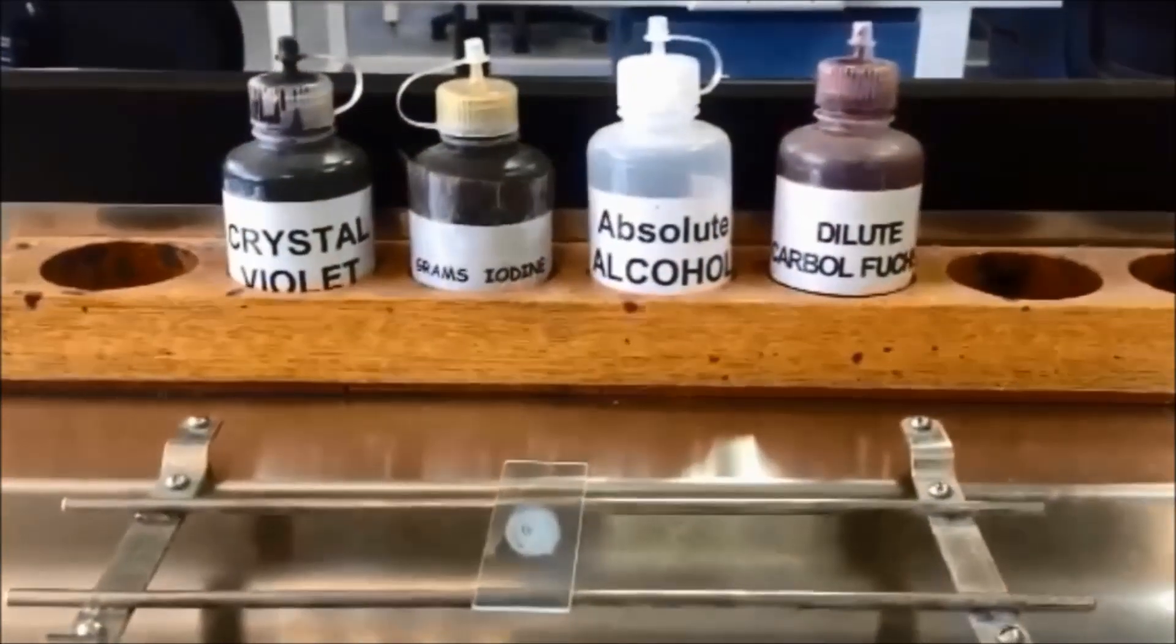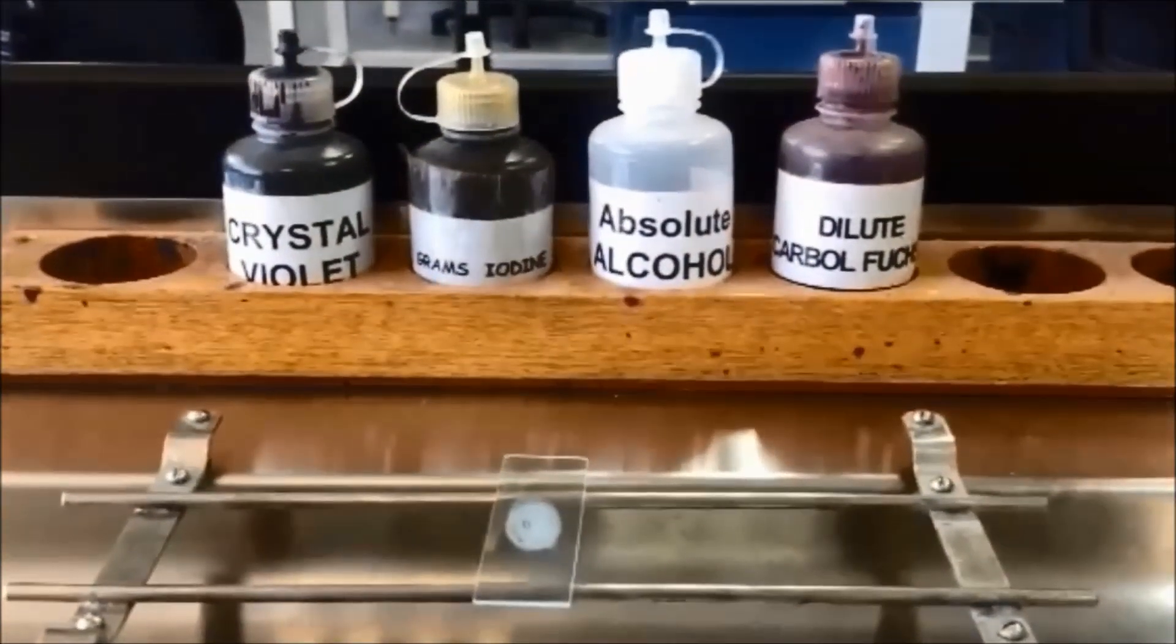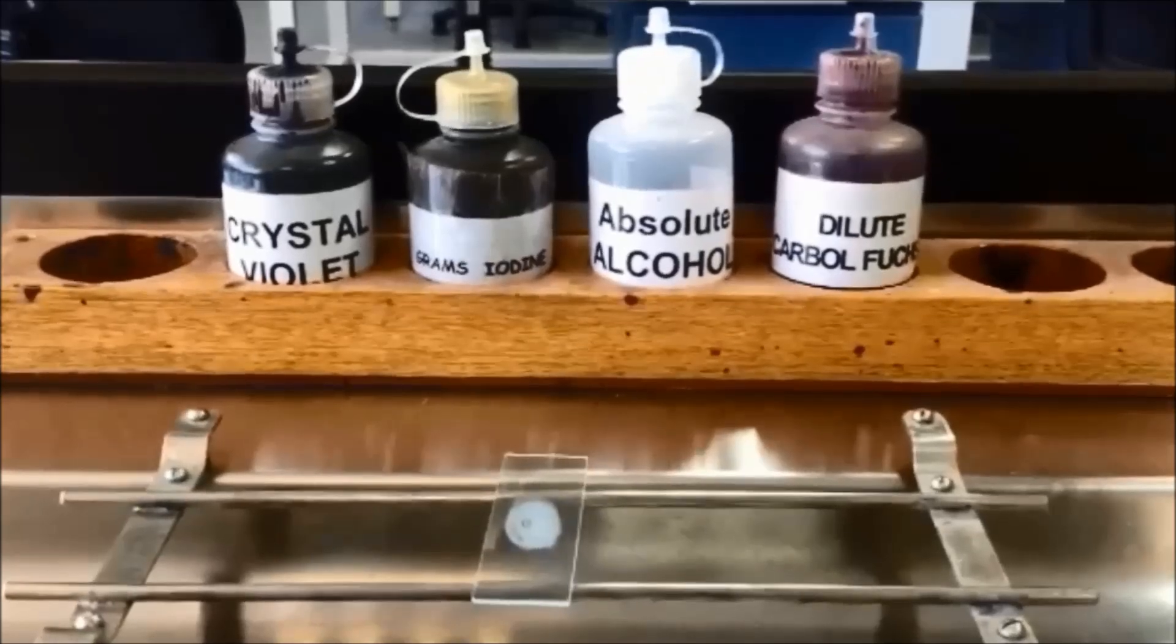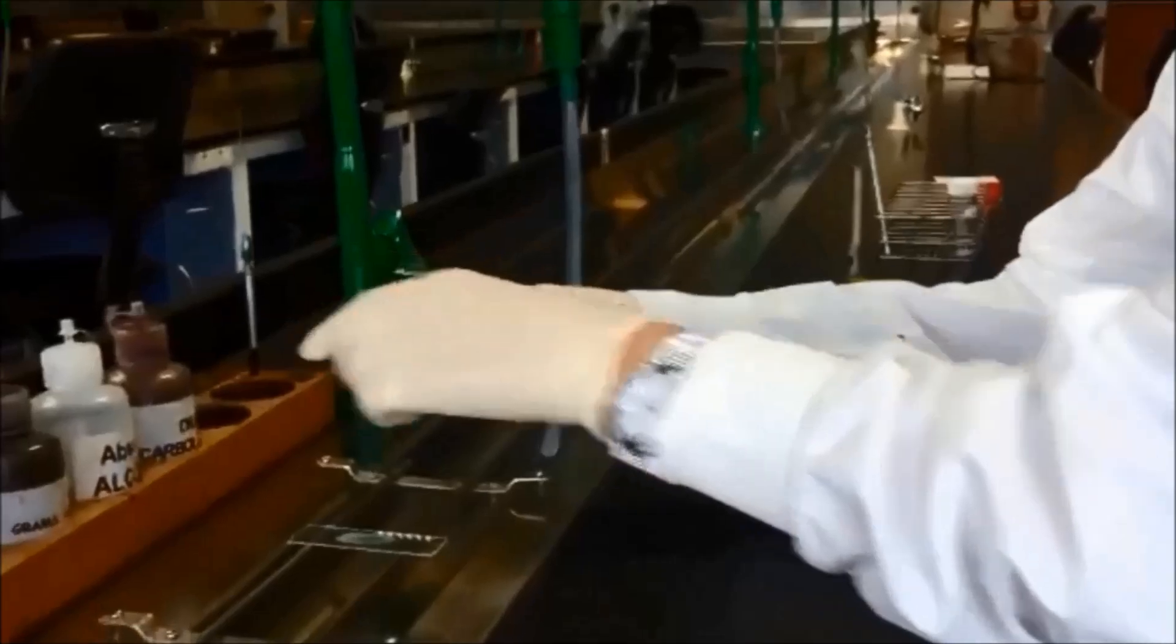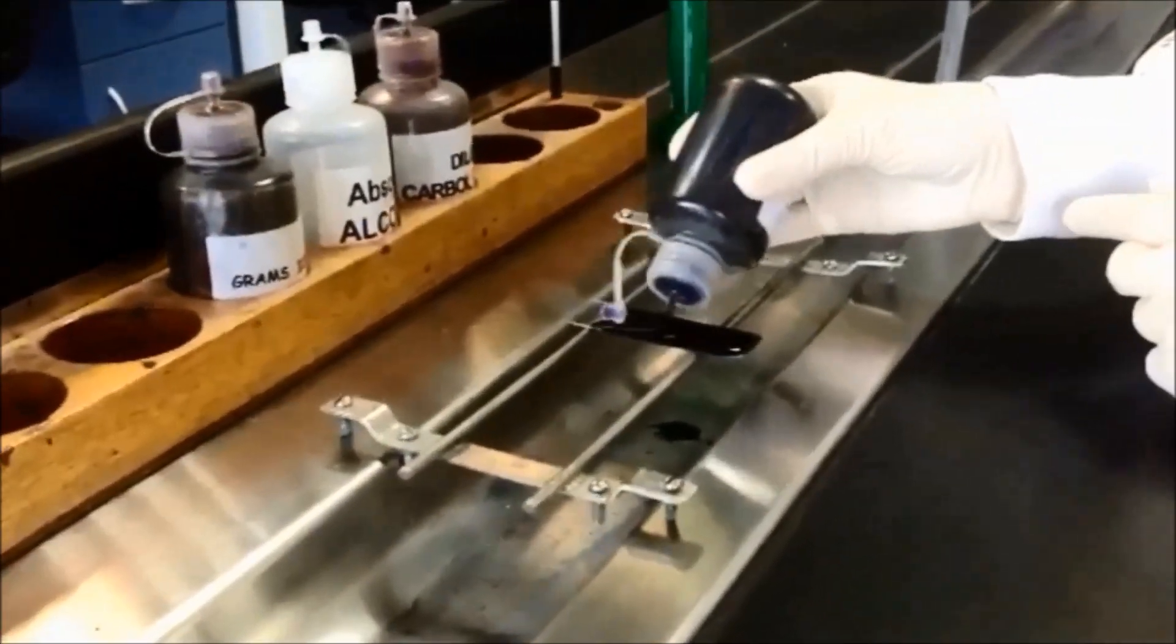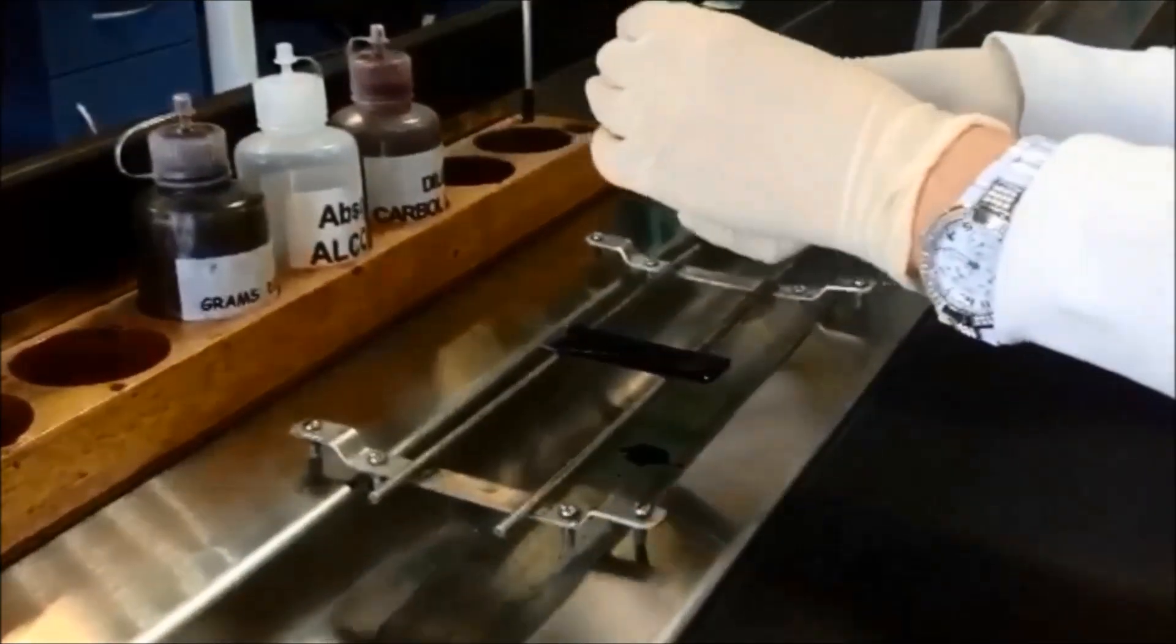The Gram staining reagents include Crystal Violet, Gram's Iodine Solution, Absolute Alcohol, and Dilute Carbolfuchsin. Wear gloves to avoid getting stain on your fingers. Stain with Crystal Violet first by flooding the slide. Leave for 30 seconds.